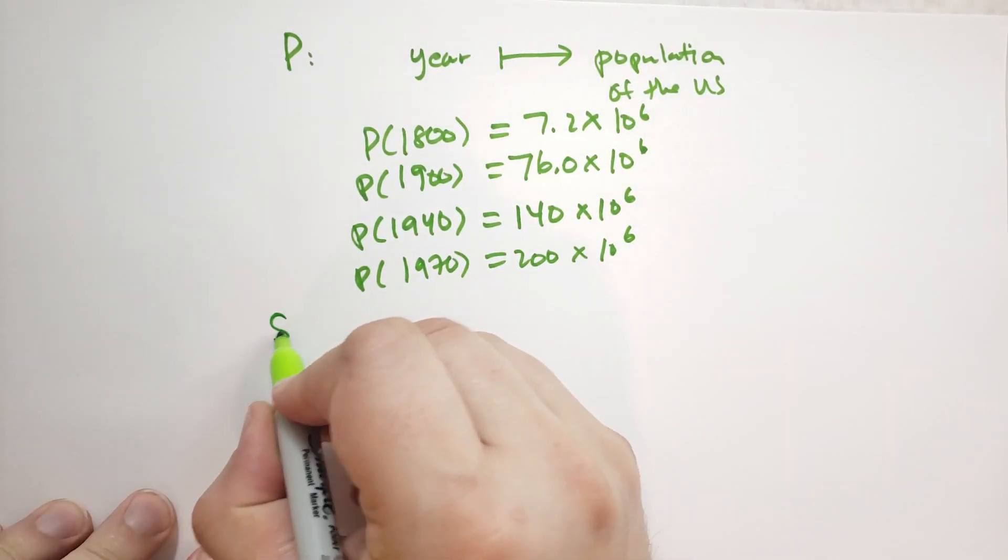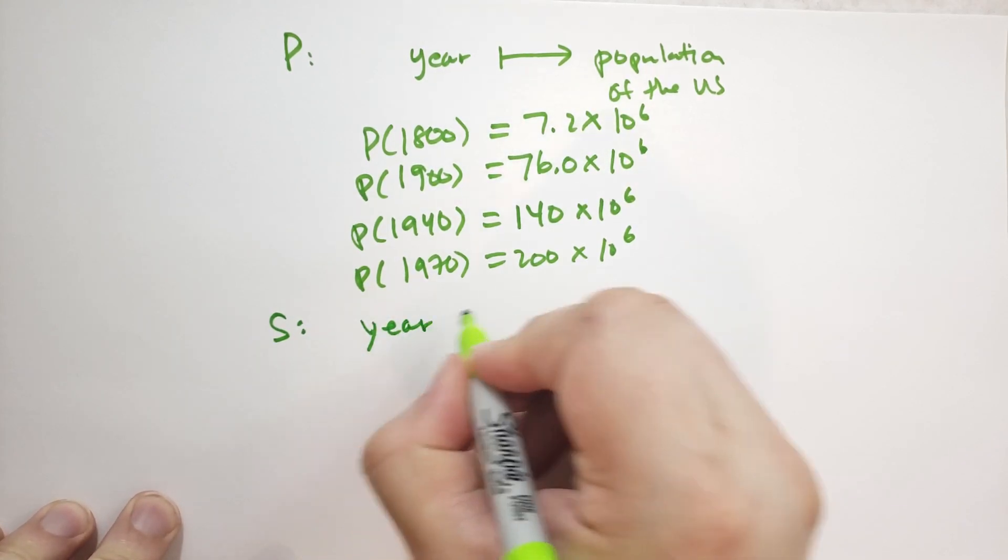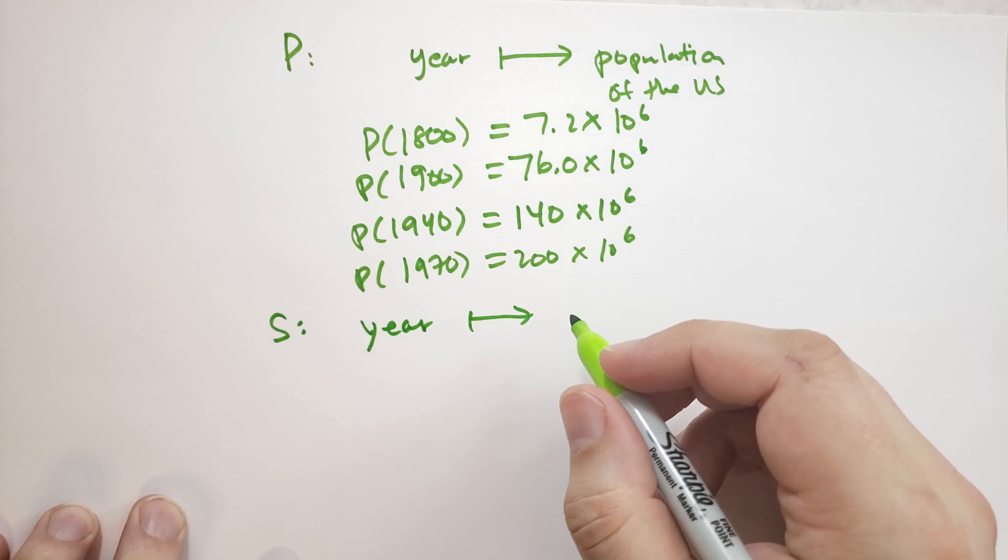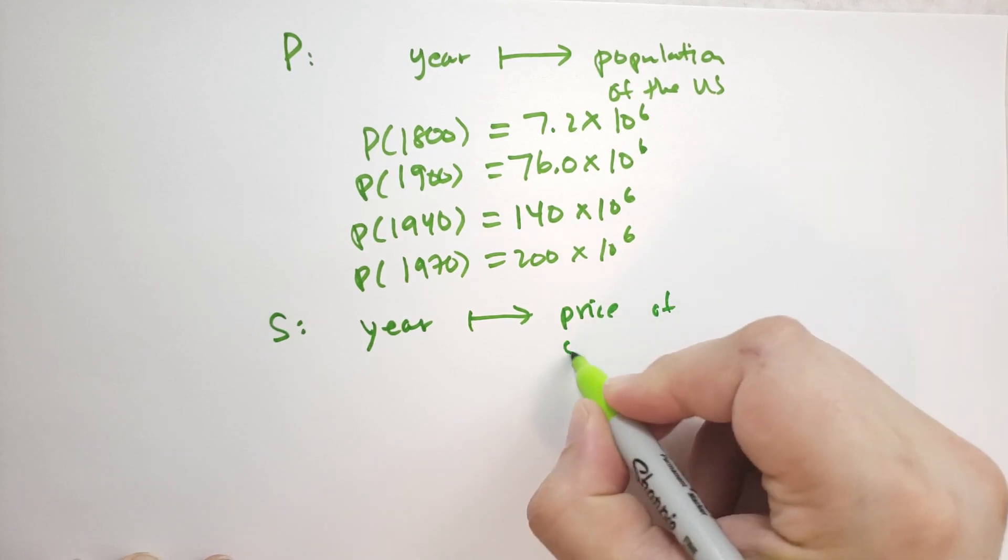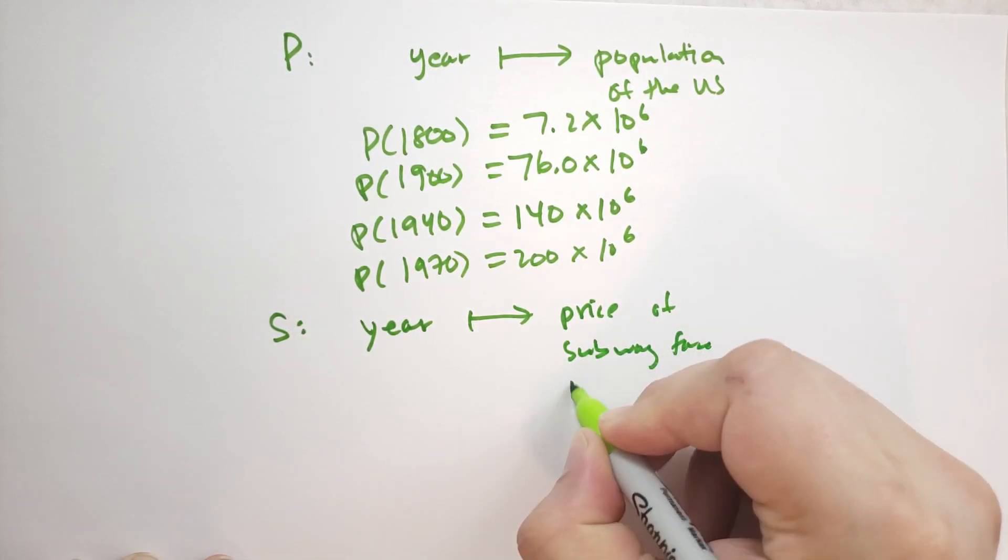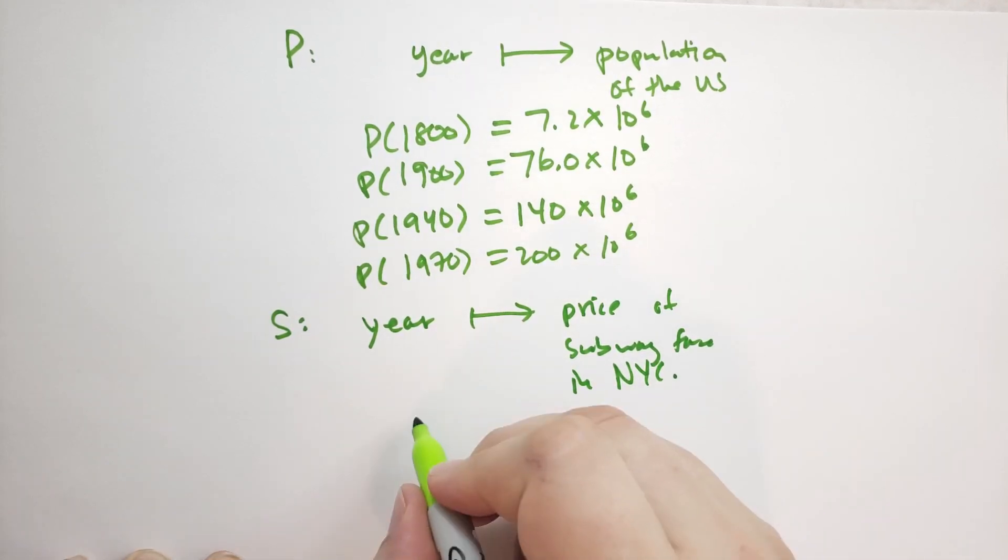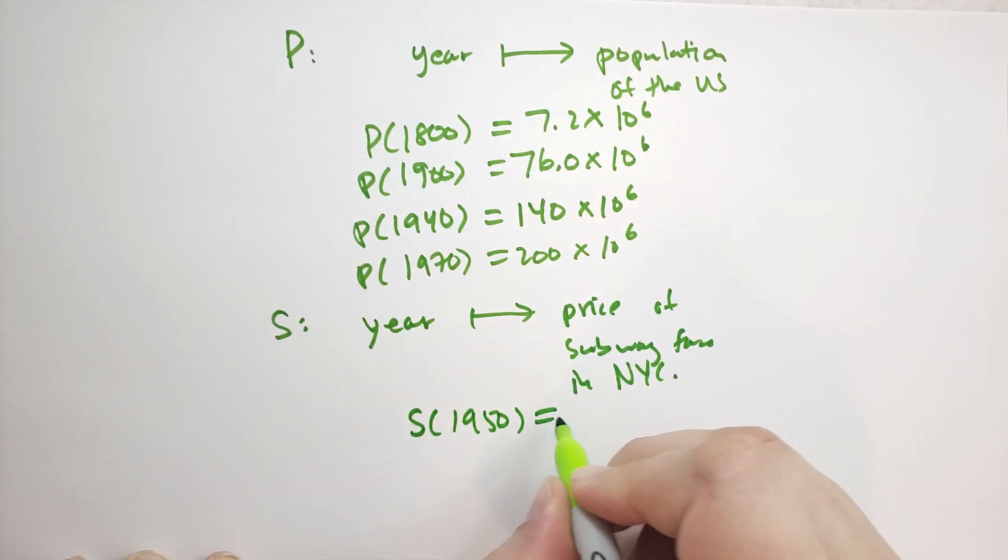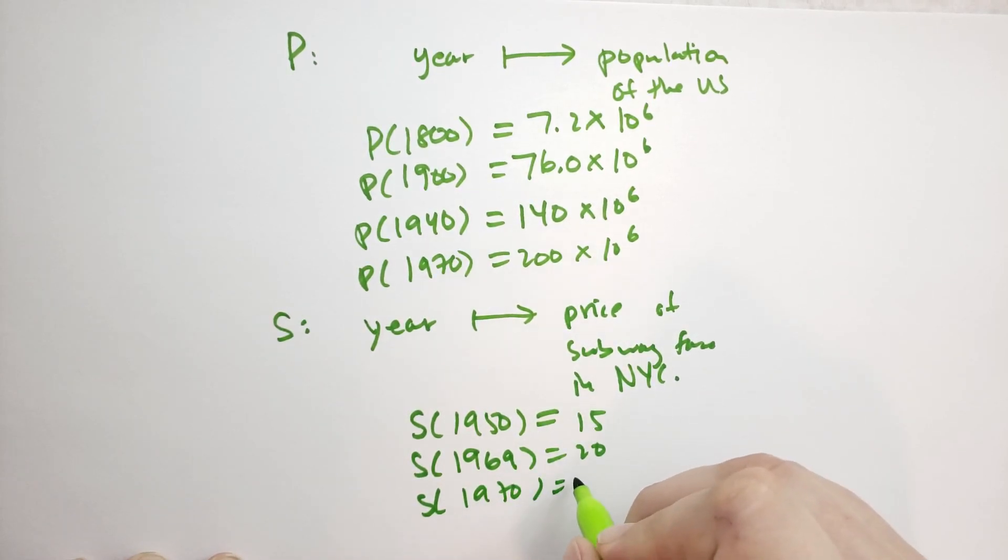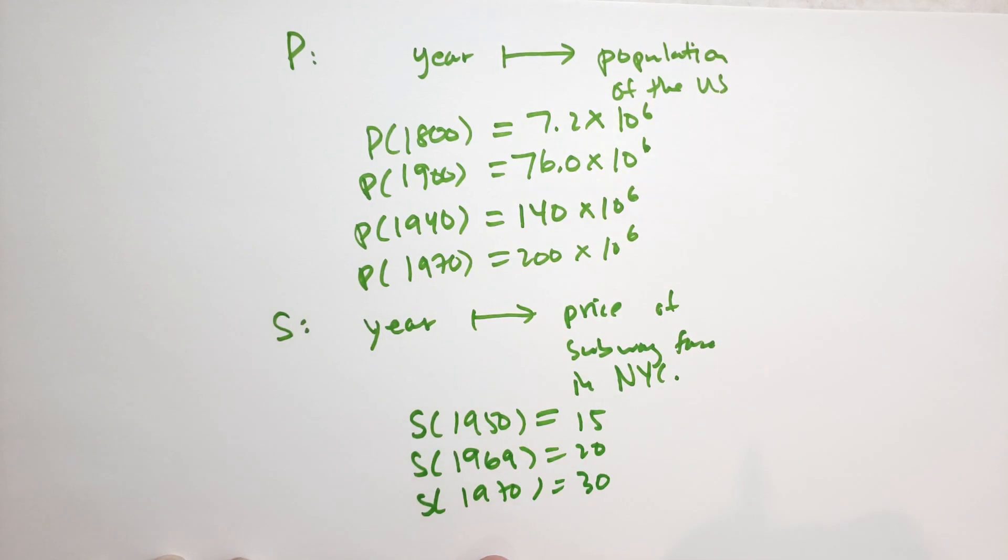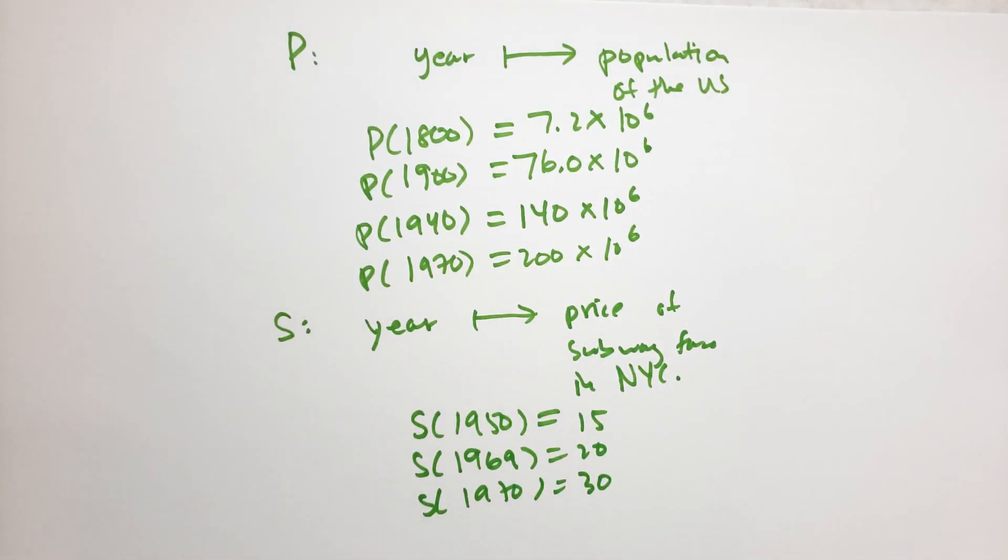Another function that he comes up with is S. And this is defined by taking the year. And this is the subway fare, the price in cents of the subway fare, price of subway fare in New York City. And so S in 1950 is equal to 15 cents. S in 1969 is equal to 20 cents. And S in 1970 was equal to 30 cents. There was a lot of inflation back then. So, again, this is another function that just helps us correlate the year to the price of something in that year. Exercises.